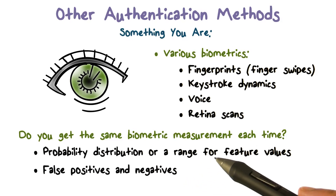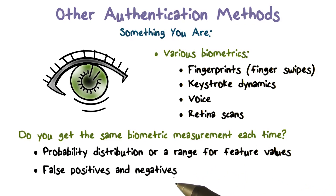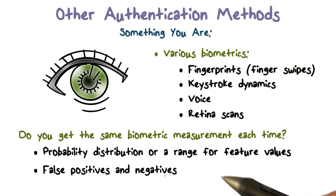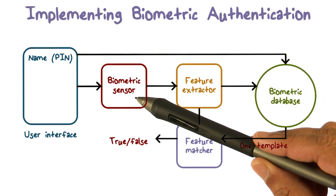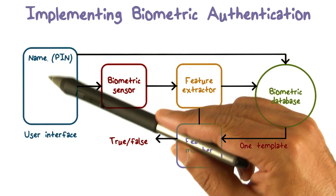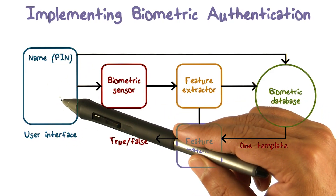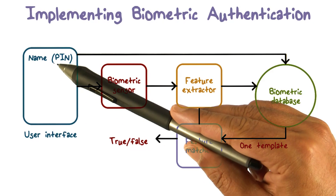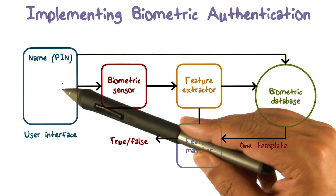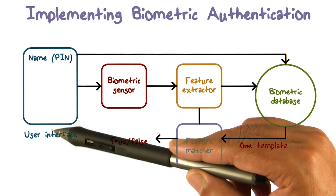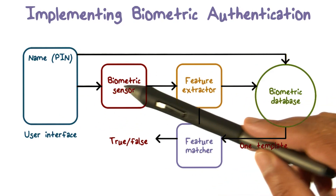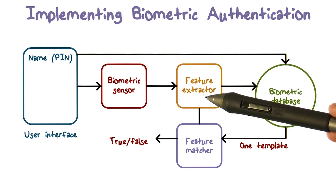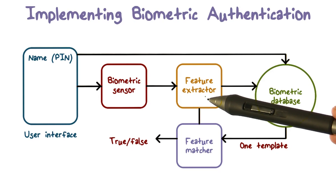If your biometric measurements change beyond a certain limit, then you may not be able to log in, resulting in a false negative. So the basic way of implementing biometrics is there has to be a biometric sensor — some user interface where you swipe your finger, a camera takes a picture of you, or you talk to it. From the biometric reading, we're going to extract a bunch of features that describe the reading from the sensor.